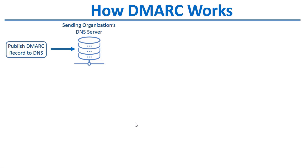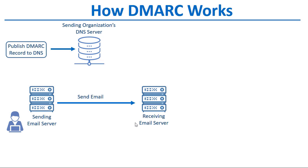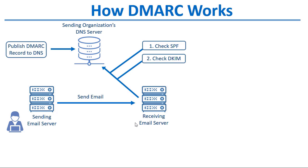The way it works is that first the sending organization publishes a DMARC record to their DNS indicating how they want mail for their domain to be handled based on the results of an SPF and DKIM lookup. When someone sends an email from your domain, the receiving server first checks the SPF record of the sender to verify that the message came from an authorized server or gateway. The receiving server then checks DKIM to verify that the public key and private key match if the message has been signed with DKIM.